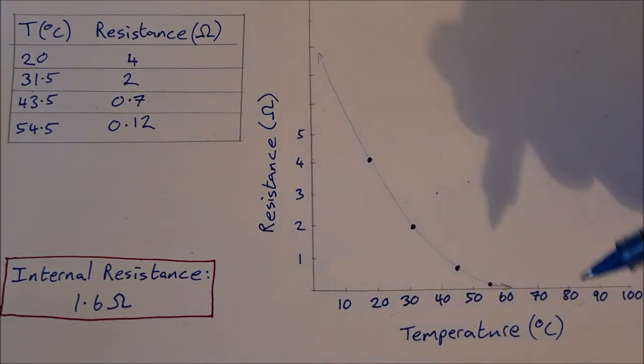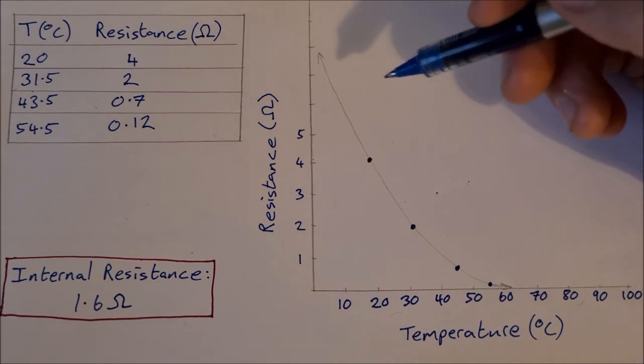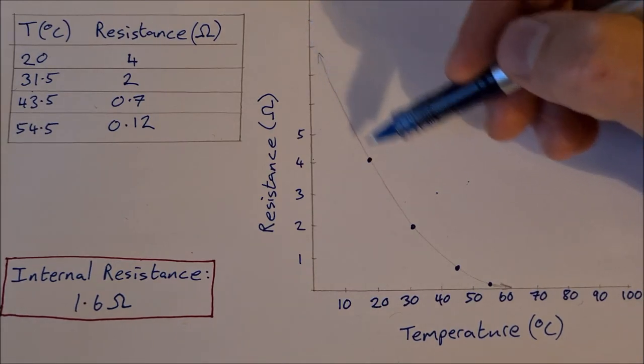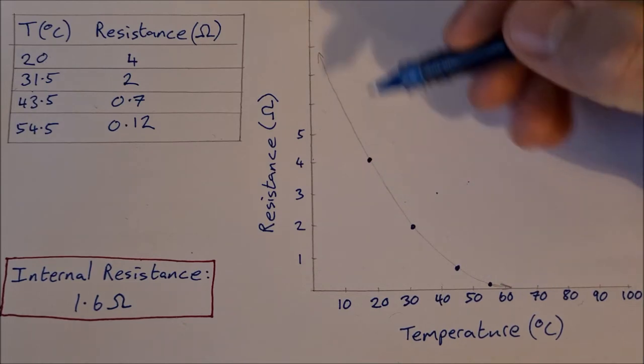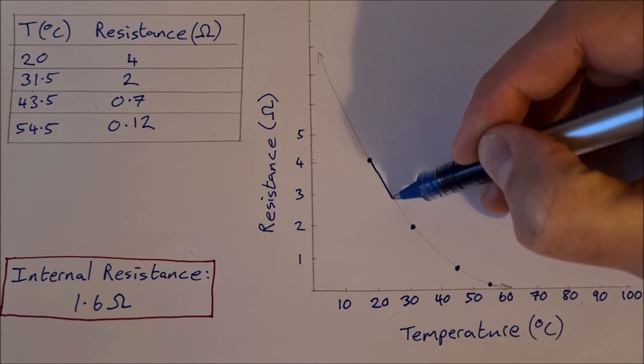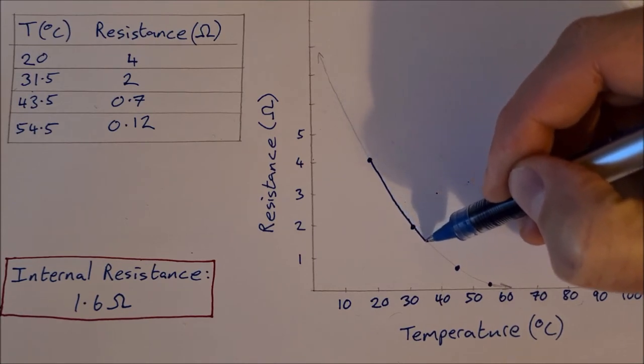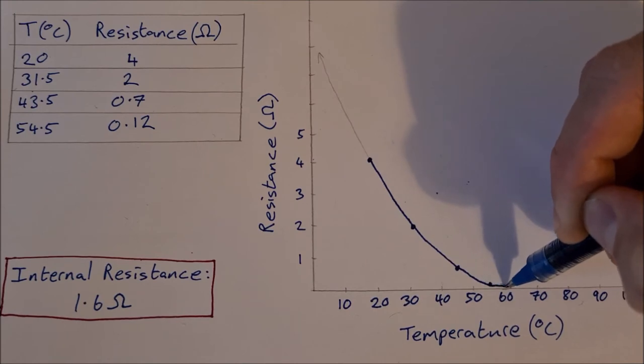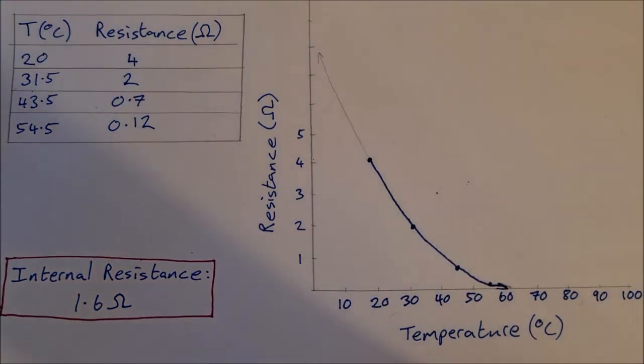So you can see that this is a non-linear relationship and that the resistance is decreasing rapidly as temperature increases. Starting here, it decreases very rapidly initially, and then it slows down and it's coming towards a limit. It will continue on down that way, and the resistance will just decrease a little bit more as the temperature increases.